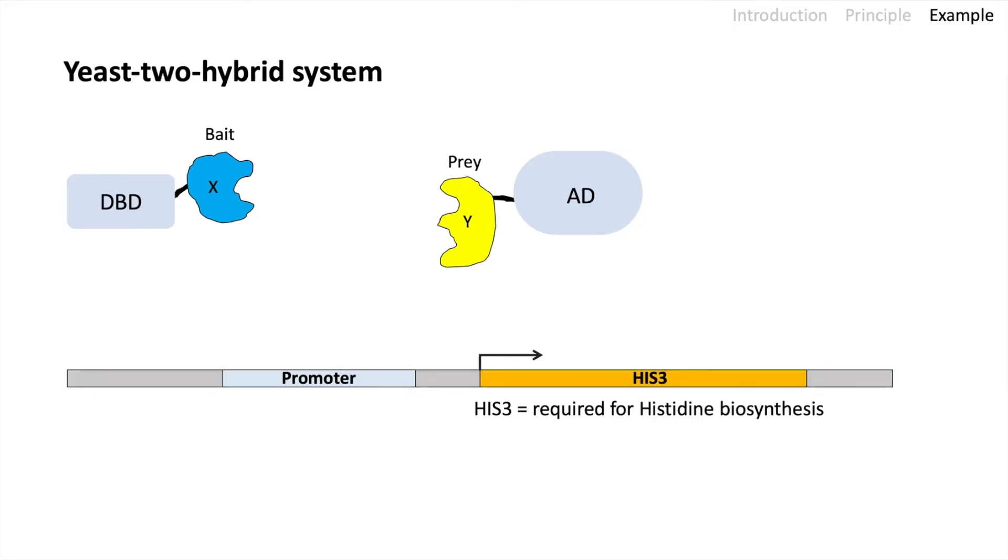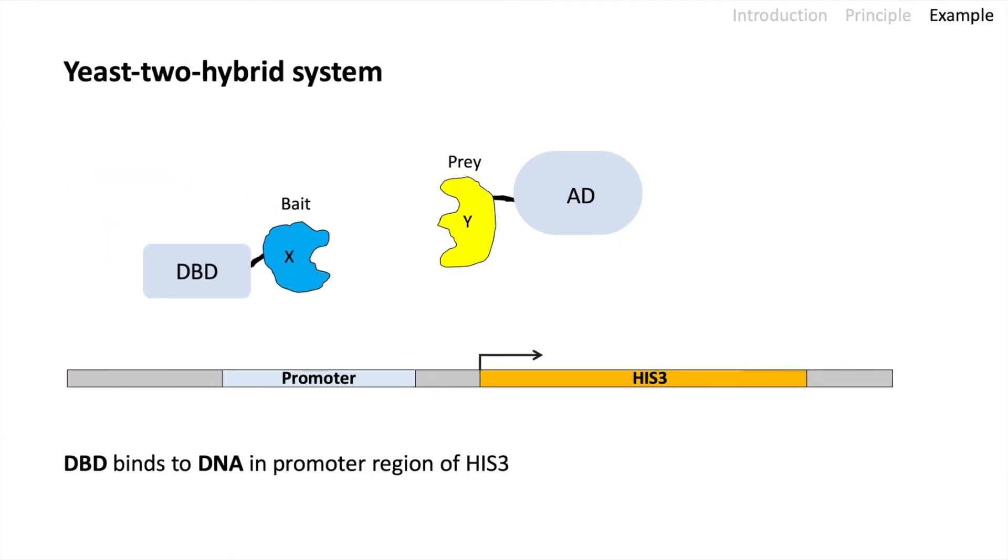Here we fused the DNA binding domain to protein X. This is called the bait, since the DNA binding domain will bind to DNA and now should attract the prey, which is protein Y. The protein Y, the prey, is fused to our activator domain.